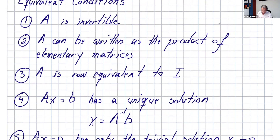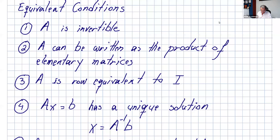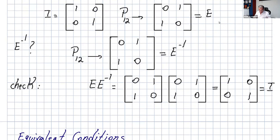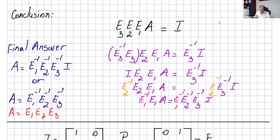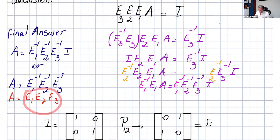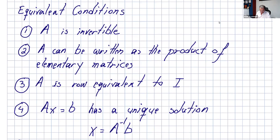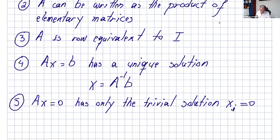There are several equivalent conditions to be aware of. If A is invertible, then: A can be written as a product of elementary matrices; A is row equivalent to I (row reducing A leads to the identity matrix); and the system Ax = b has a unique solution, which can be found as A inverse times b.